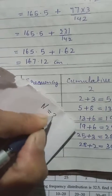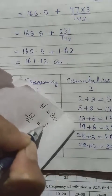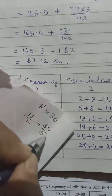Capital N here, we have 30. To get the median class, we divide it by 2. So 30, we divide it by 2, we get 15.